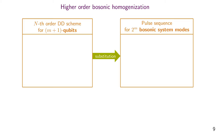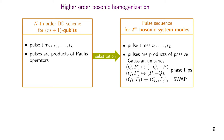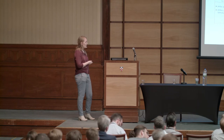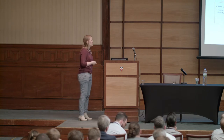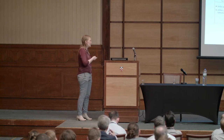The second part — bosonic homogenization — is a bit harder. We introduce a substitution that takes an nth-order dynamical decoupling scheme for qubits and translates it into a pulse sequence for bosonic modes. We take a pulse sequence for M+1 qubits with the same pulse times, and transform the pulses themselves according to some substitution rule: we take an M+1 qubit scheme where pulses are tensor products of single-qubit Pauli operators and transform them into passive Gaussian unitaries in the bosonic setting. The first type are phase flips and the third type is a swap operator between two modes.